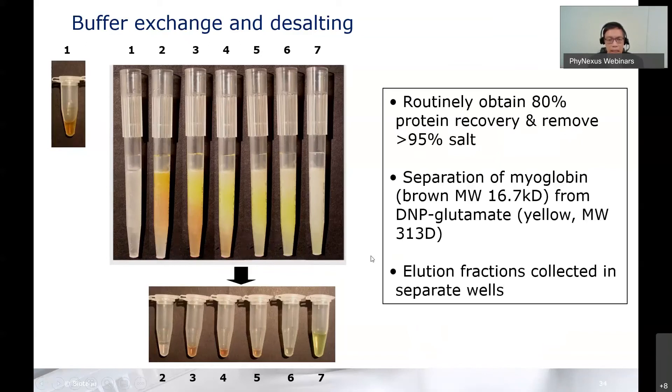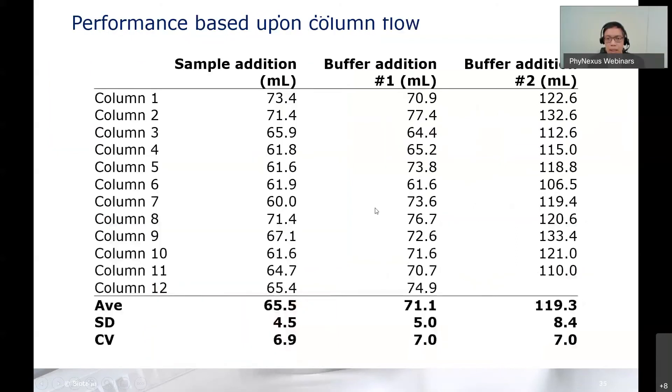We routinely get 95% protein recovery and very good salt removal. Here we're separating two molecules based on size—the 16.7 kilodalton myoglobin and the 300 Dalton salt. We collected elution fractions in this example.